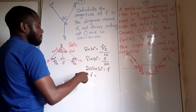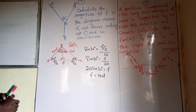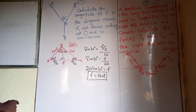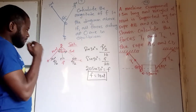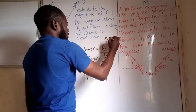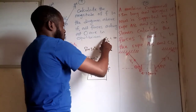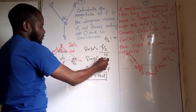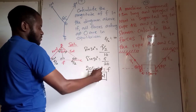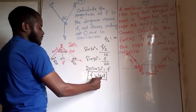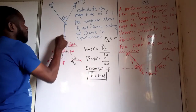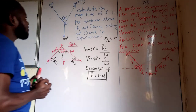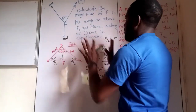Therefore, F equals 20 times sine 30 degrees. Since sine 30 is 0.5, we get 0.5 times 20, which gives us 10 newtons. So F equals 10 newtons. That's all about question 9.